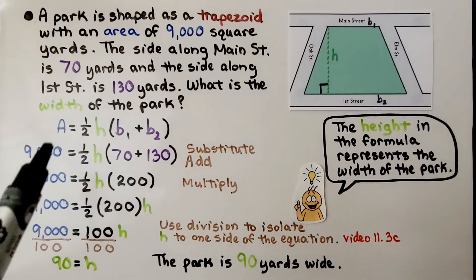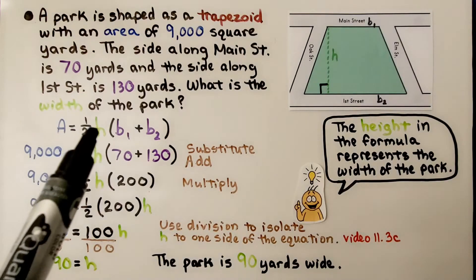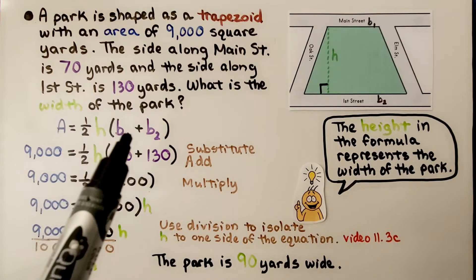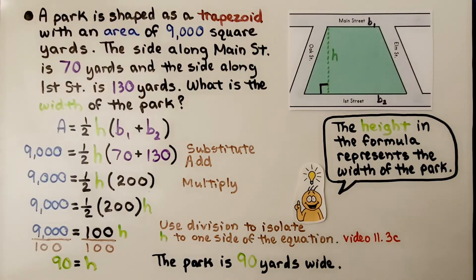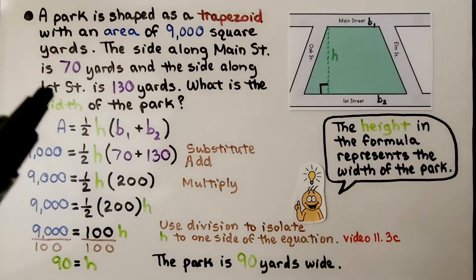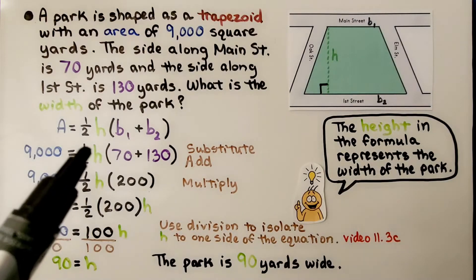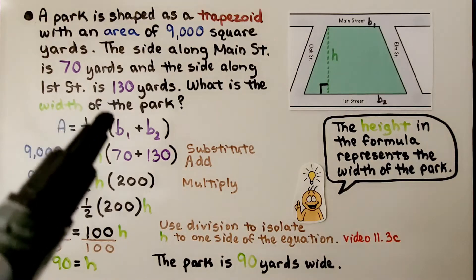We have our formula: the area is equal to half the height multiplied by the first and second base added together. We substitute the values we've got. The area is 9,000, and it's equal to half the height, which we're using as width but we don't know, so we leave it as h. One side is 70 and the other side is 130.